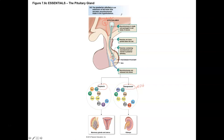Oxytocin can stimulate uterine contractions and also stimulate the release of breast milk. The stimulus for oxytocin release is sensory information — for example, suckling or pressure in the uterus sends a sensory signal up to the hypothalamus, which then triggers the exocytosis of oxytocin. So stimulation comes from sensory signaling back to the hypothalamus, and inhibition is simply the absence of that sensory stimulus.